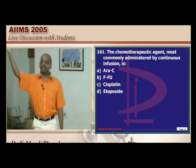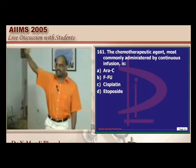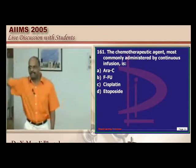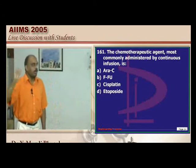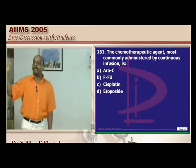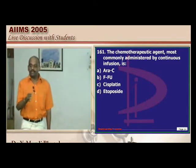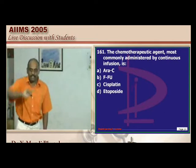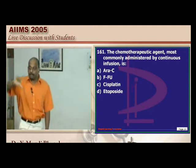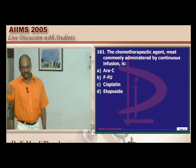Neurocysticercosis, toxoplasmosis, tuberculosis of the brain, and lymphoma are the closest differential diagnoses. How do you differentiate them radiologically? In which case is there midline shift, where is there perilesional edema, where is there massive perilesional edema — these are favorite exam questions.